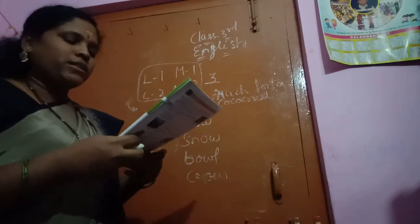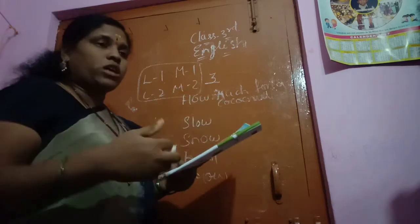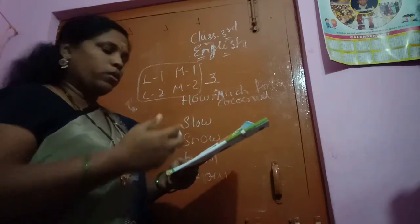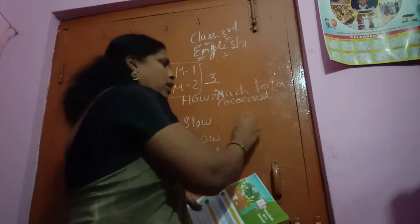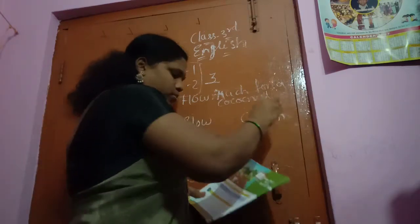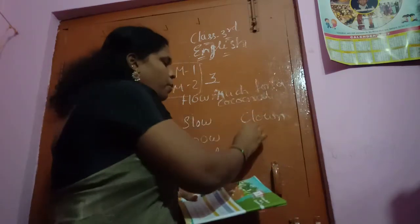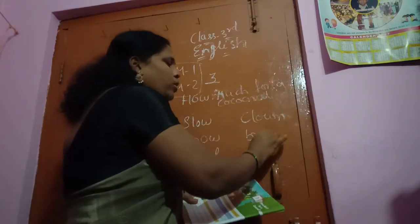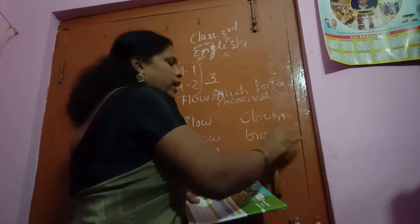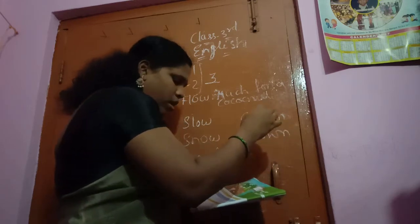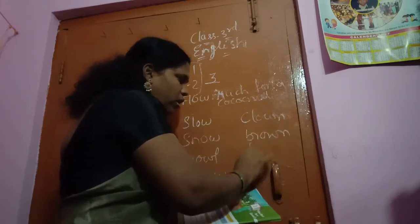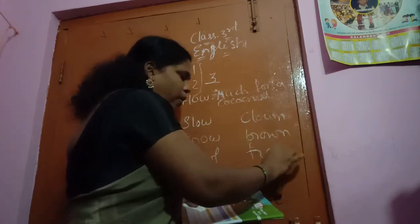And next, how the OW sounds — 'how', 'oh', like this. Clown. Brown. Clown. Brown. Frown.